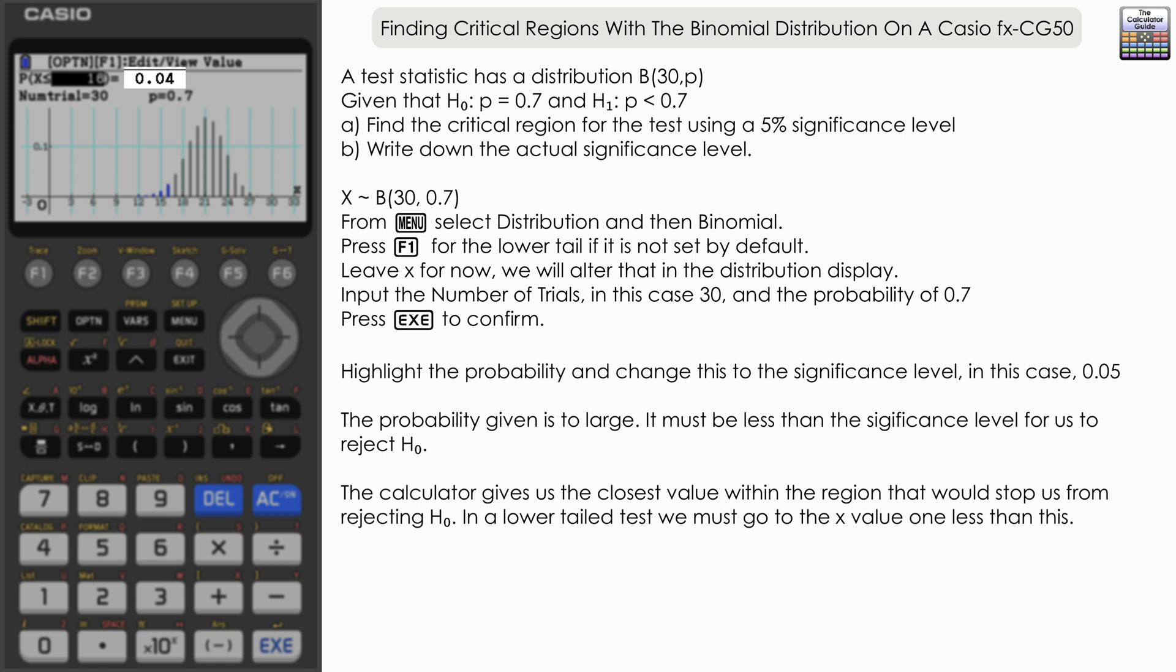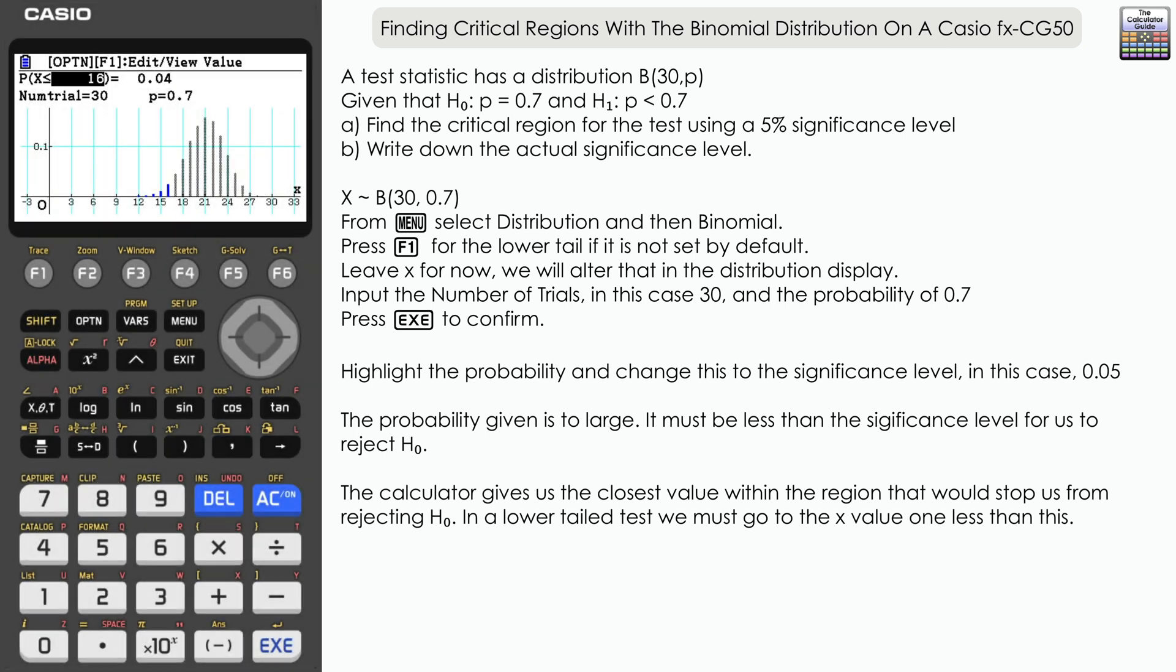So we can answer the two parts of the question now. Find the critical region: it is going to be where x ≤ 16, and the actual significance level is the probability that is given here, 0.04.